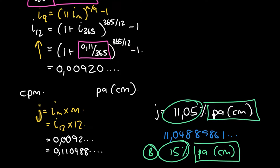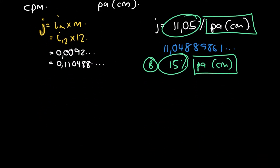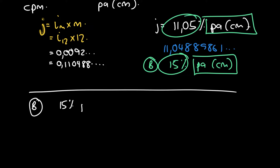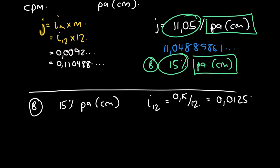Now let's try a slightly different approach. Previously we converted I12 to a nominal rate for comparison. Alternatively, we could convert Institution B's nominal rate to its effective interest rate I12 and compare directly. We do the same steps to get A's I12, and for B: I12 equals 0.15 divided by 12, which gives 0.0125.